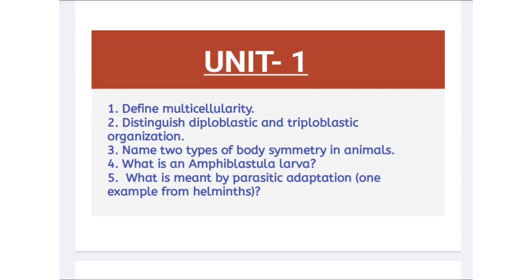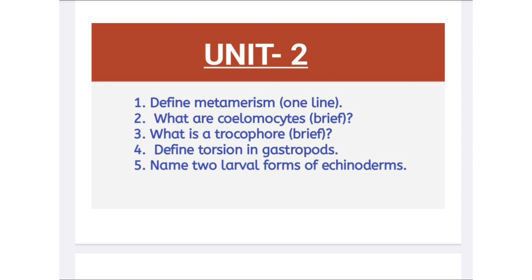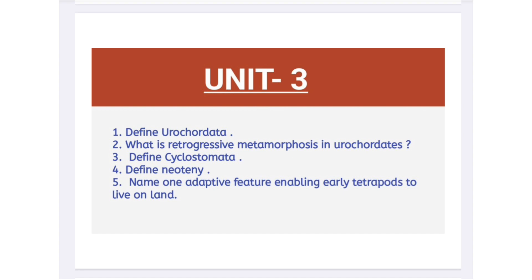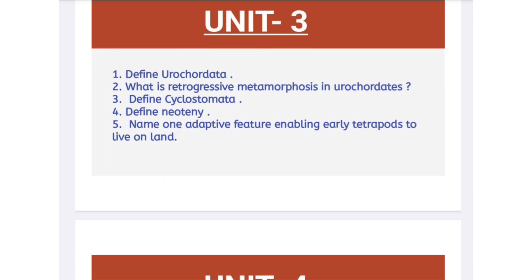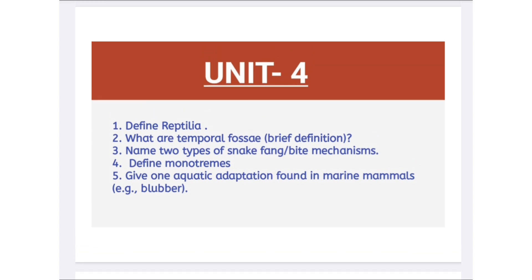In each unit I have given only five questions for the short questions. If you learn these five questions, you can automatically attempt those questions from each unit. From the first unit, prepare these five questions; from the second unit, these are the five important questions. Metamerism is important and torsion in gastropods is important — these are the most repeated questions. This is the third unit important questions and this is the fourth unit important questions. If you learn all these questions, you can score full marks in Part A of your examination.